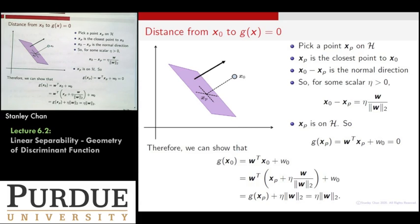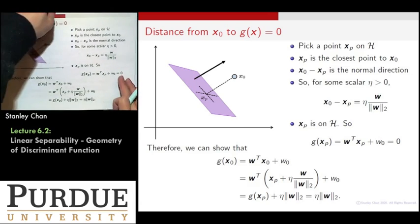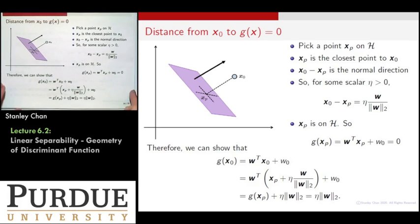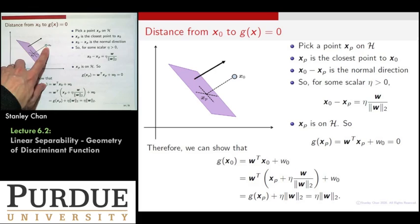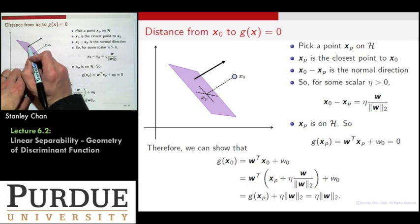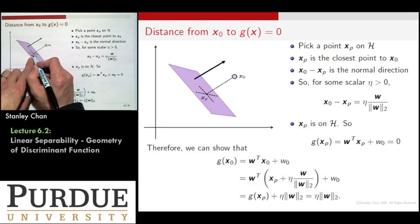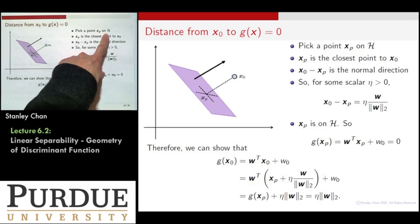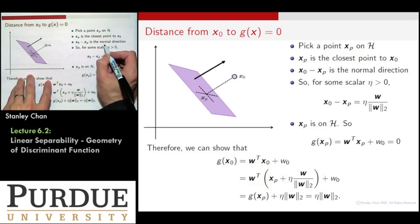So we want to understand how to calculate the distance from a point to a plane. There are two approaches; I'll illustrate both. The first approach is to do it on the picture. Imagine x_0, which is not on the plane. Along the normal vector direction, you project onto the plane to get x_p — a point that really is on the separating hyperplane. Then x_0 minus x_p defines the normal direction.